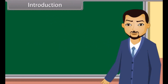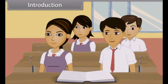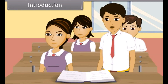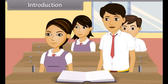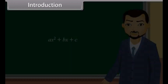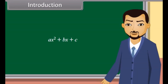Students, do you know what polynomials are? A polynomial is an expression of more than two algebraic terms. Can you tell which type of polynomial is this? Is it a quadratic polynomial? Correct. This is a quadratic polynomial. When we equate this polynomial to zero, we get a quadratic equation. Today we will learn about quadratic equations.